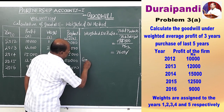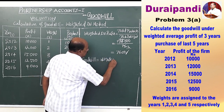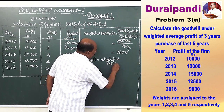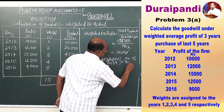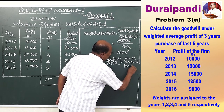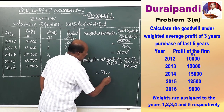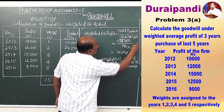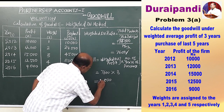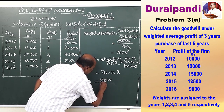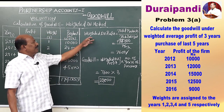Goodwill is equal to weighted average profit multiplied by the number of years of purchase. That is equal to 7,600 into 3 years of purchase, which equals 22,800. This is the amount of goodwill under the weighted average method.